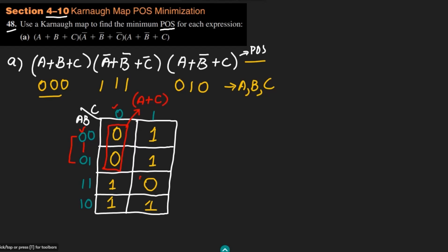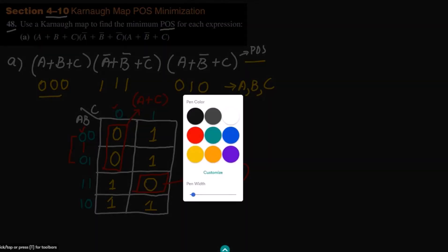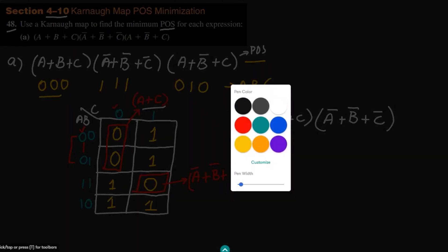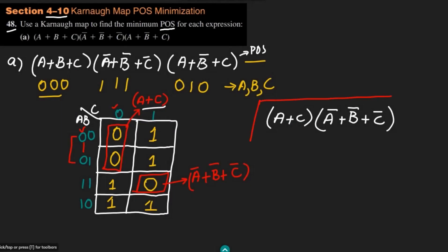The second zero at (1,1,1) is alone. To make all three equal to 0, I need A' + B' + C', and this is the second entry. I then multiply the two groups together, giving me (A + C) as the first term and (A' + B' + C') as the second term.